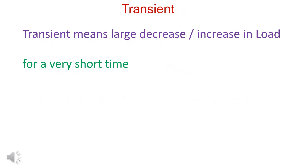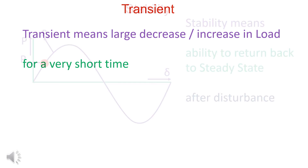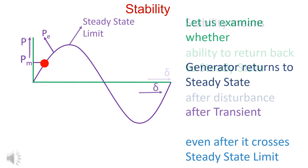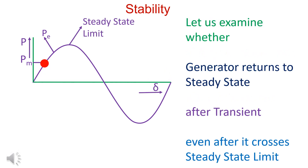Transient means a sudden change in load for a very short time. Stability means the ability to return back to steady state after a transient. We will examine whether the generator returns to steady state after a transient, even if it crosses the steady state.